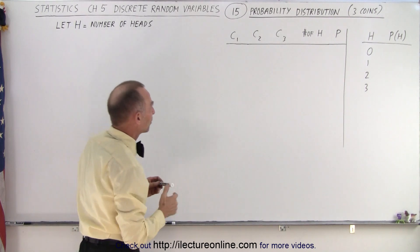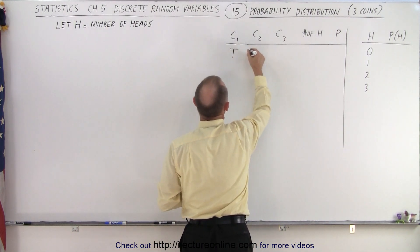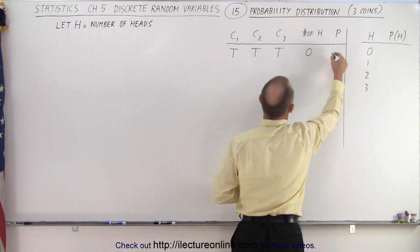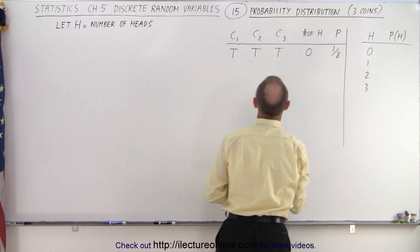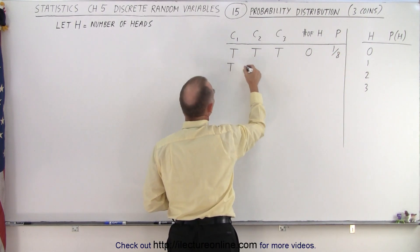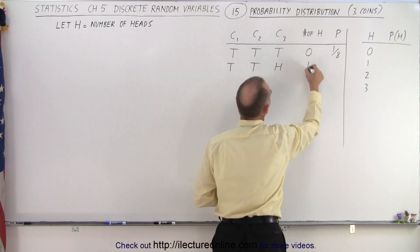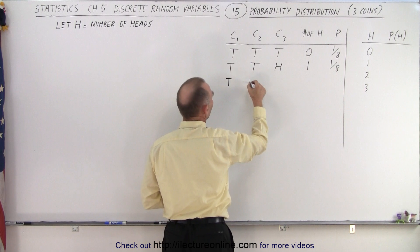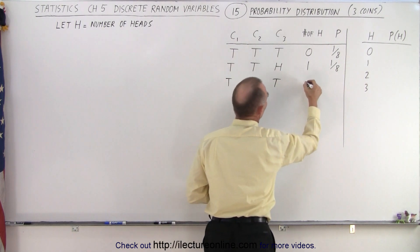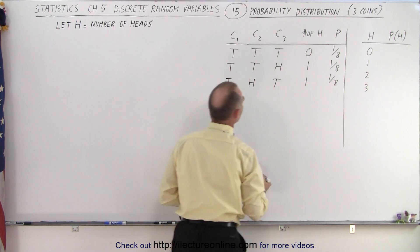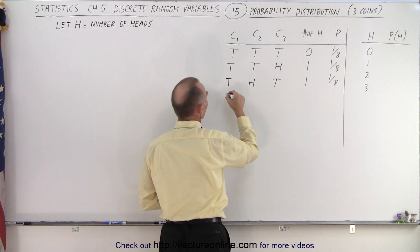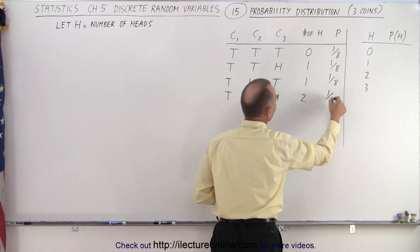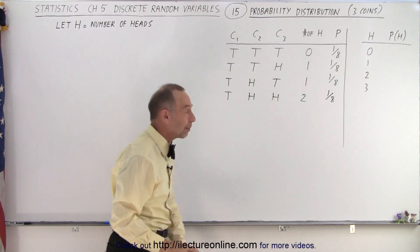Let's start out when every one of the coins has a tail — that means there are zero heads, and the probability of this occurring is one out of eight. Then we can have tails, tails, and heads — that means we have one head, and that probability is one out of eight. Or we could have tails, heads, tails — one head, one-eighth probability. Then we have tails, heads, and heads — now there are two heads, and again that combination has one-eighth probability of occurring.